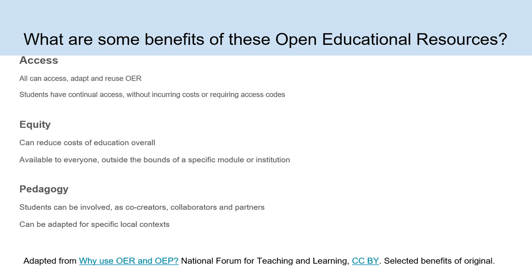Equity: OER could reduce the cost of education overall, and it's available to everyone outside the bounds of a specific module or institution — it levels the playing field. You don't have to worry about some students having the resource and others not, or being unsure as an educator whether they didn't get it because they couldn't afford it. Everybody has the same access. Pedagogy: students can be involved as co-creators, collaborators, and partners, and resources can be adapted for specific local contexts.